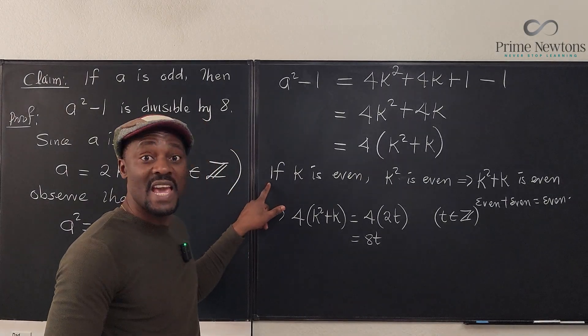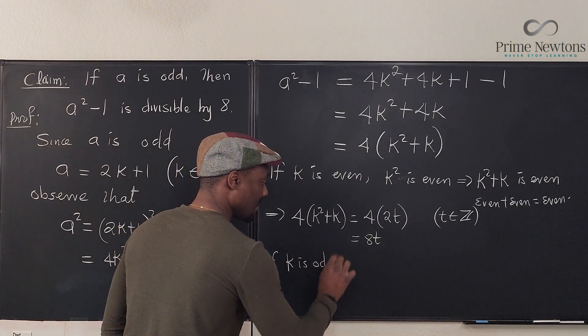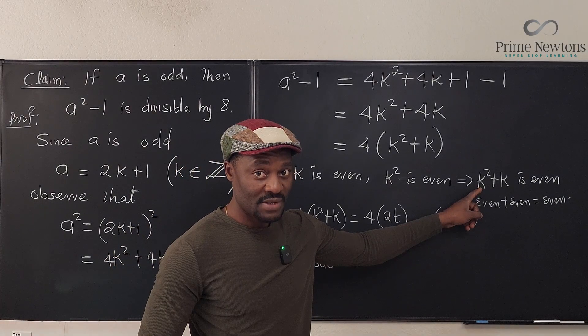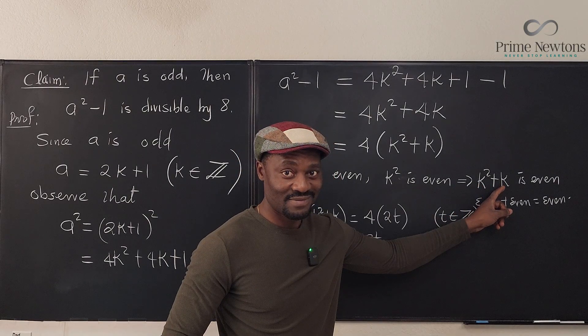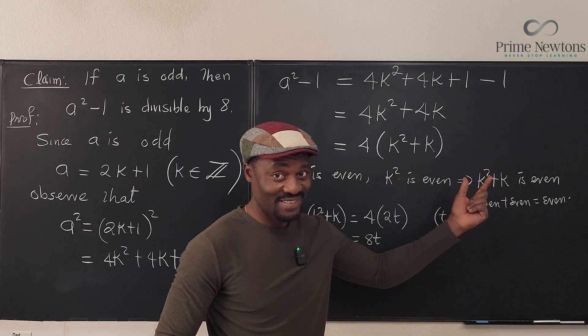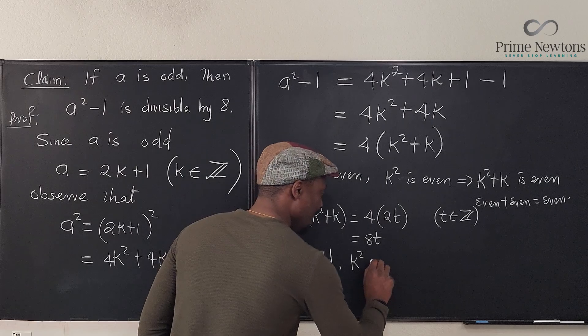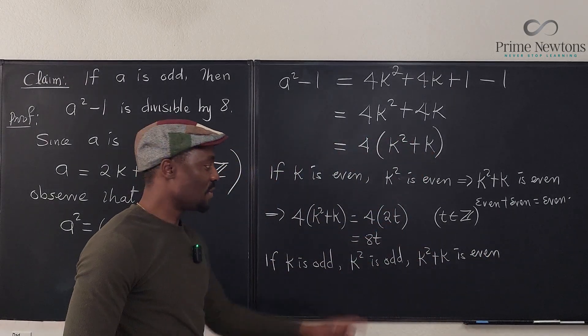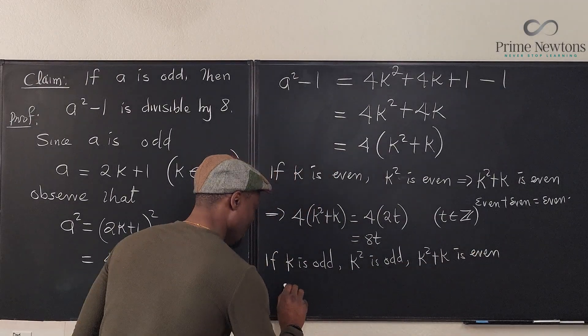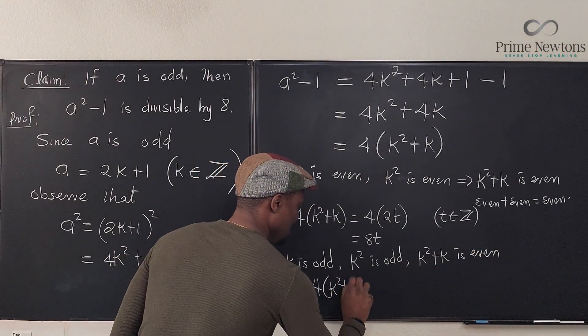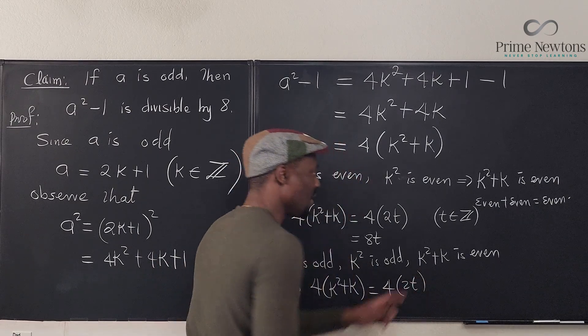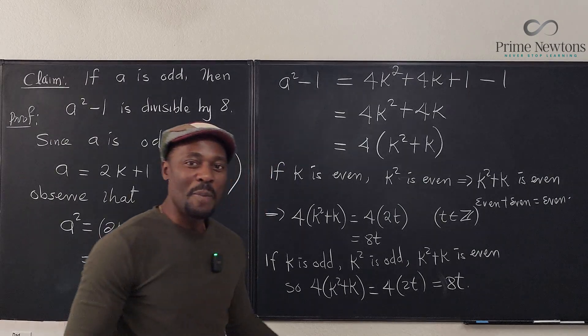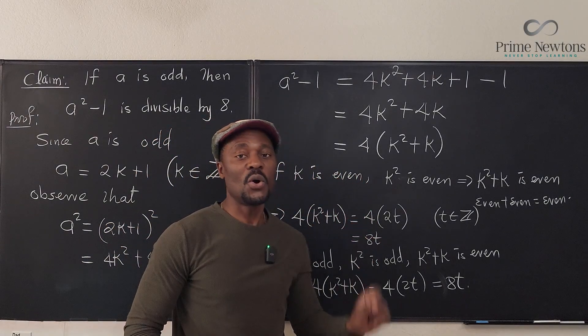Now, the second option is if k is odd. If k is odd, then watch this again. The square of an odd number is odd. The sum of two odd numbers is even. Odd plus odd is even. So if k is odd, then k² is odd, and k² + k is even. And we're back to where we started again. And so, 4(k² + k) will be equal to 4(2t) again, where t is an integer, which is equal to 8t. So no matter how you look at it, the square of an odd number minus 1 is always divisible by 8.